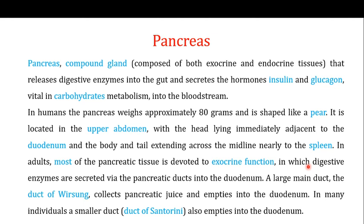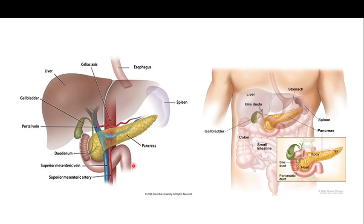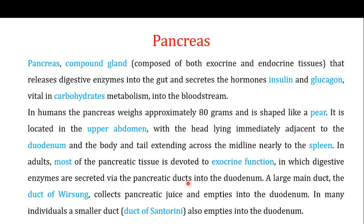In adults, most of the pancreatic tissue is devoted to exocrine functions — releasing digestive enzymes through the pancreatic ducts into the duodenum. If you look at the image, the green tubes represent the pancreatic ducts. The exocrine part releases digestive enzymes through these ducts into the duodenum, which helps in the process of digestion.